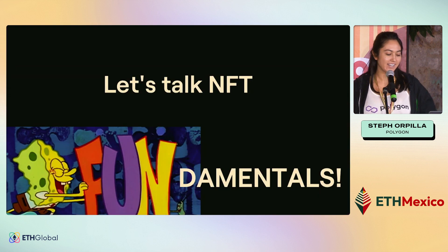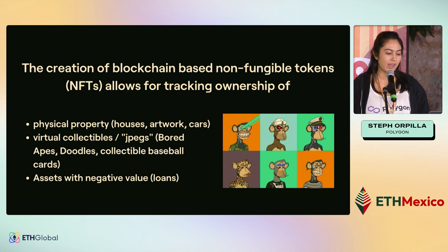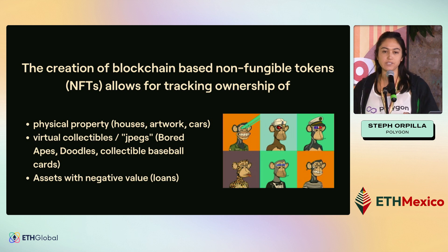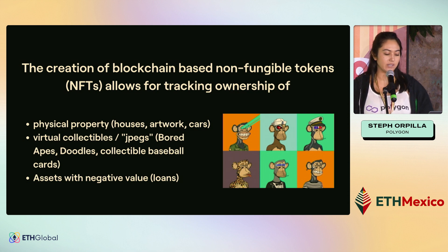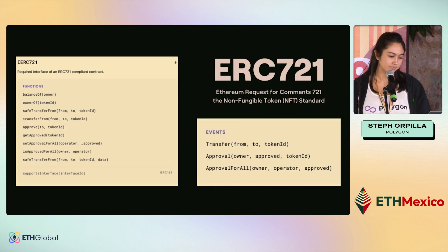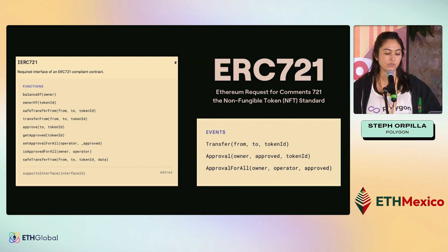So let's talk about NFTs, and we'll just start with fundamentals. NFTs allow for the creation of non-fungible tokens for tracking ownership of different things. We've seen that as digital collectibles like the Bored Ape Yacht Club collection, but we've also seen physical properties being sold as NFTs, and even assets with negative value like loans. But this is just an ERC721 token standard.